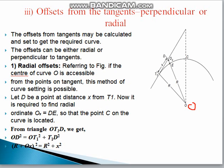At a distance x from T1, let D be the point on the tangent. We need to find the radial ordinate OX, where OX equals DE, so that point C on the curve is located. From triangle OT1D, since the angle at D is exactly 90°, OD² = OT1² + T1D².